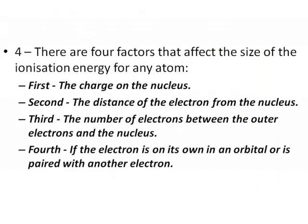Four, there are four factors that affect the size of the ionization energy for any atom. One, the charge on the nucleus. Two, the distance of the electron from the nucleus. Three, the number of electrons between the outer electrons and the nucleus. Four, if the electron is on its own in an orbital, or is paired with another electron.